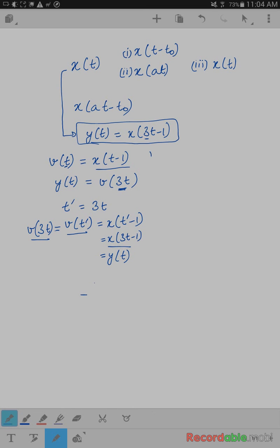A suggestion in the class was that we can do it another way, and indeed we can, which is the way we actually did the calculations in the class. So we said, instead of defining the intermediate variable v of t as x of t minus 1, we'll define u of t, which is x of 3t. So we first do the multiplication or scaling of the axis, and then we'll do the shifting.